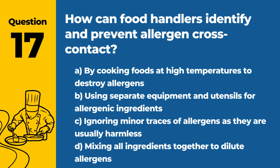Question 17. How can food handlers identify and prevent allergen cross-contact? The answer is B: Using separate equipment and utensils for allergenic ingredients. Preventing cross-contact is crucial for the safety of customers with food allergies.